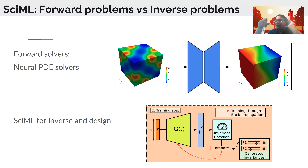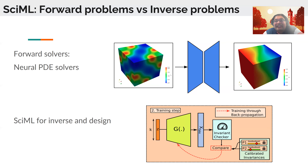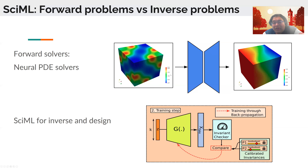Once you have this, if you have some measurement data, you can use SciML for inverse problems and design. If you have data, constraints, or a cost function you want to maximize or minimize over design variables, you can use neural PDE solvers within an optimization framework, or define a neural network using generative model ideas with inherent constraints. You specify a design requirement, a trained generator produces a field or point of interest, and you ensure this quantity satisfies your underlying physics via a calibrator invariance.